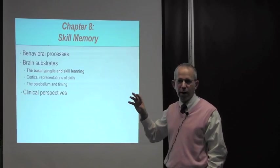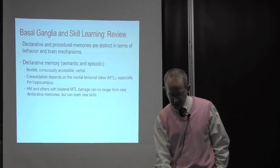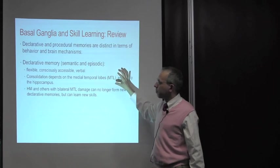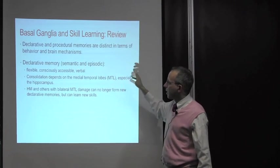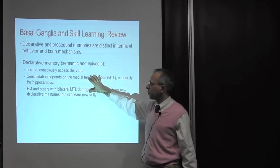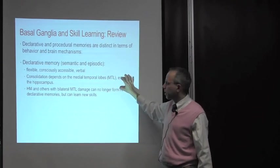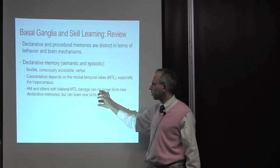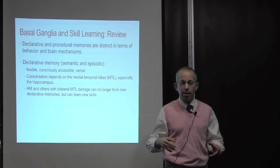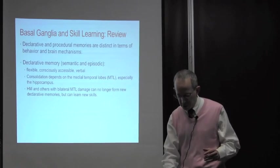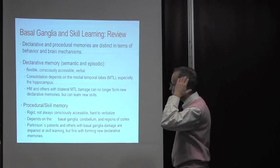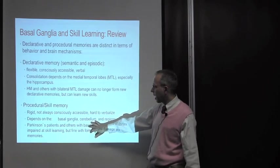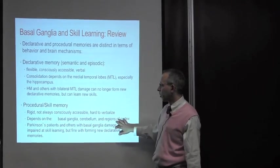We'll turn now to talking about the brain substrates of skill memory and focus first on the basal ganglia. Declarative memories, the semantic and episodic, they're flexible, they're consciously accessible, they're verbalizable, they depend on consolidation in the medial temporal lobe, especially the hippocampus. We know that patients who have damage to the hippocampus can no longer form new declarative memories but they can learn new skills. The question is, what are the brain regions not damaged in HM? Procedural skill memories depend on several structures: the basal ganglia, the cerebellum, and some regions of cortex.